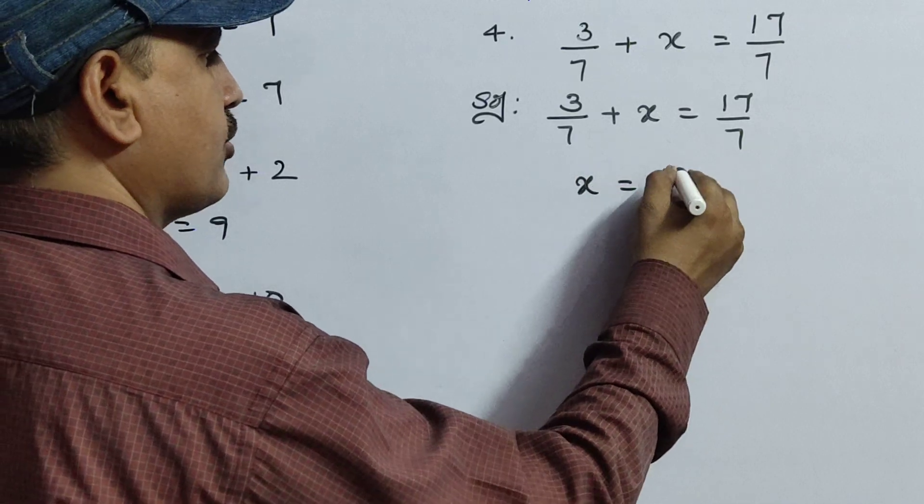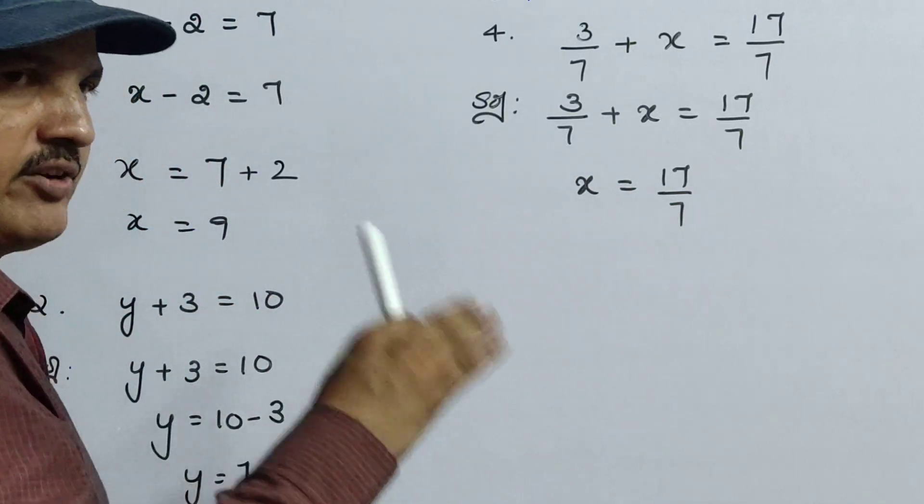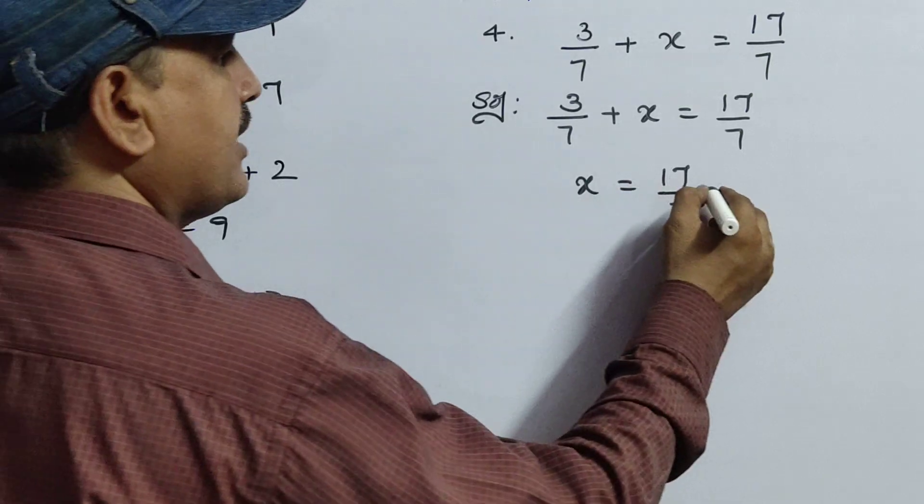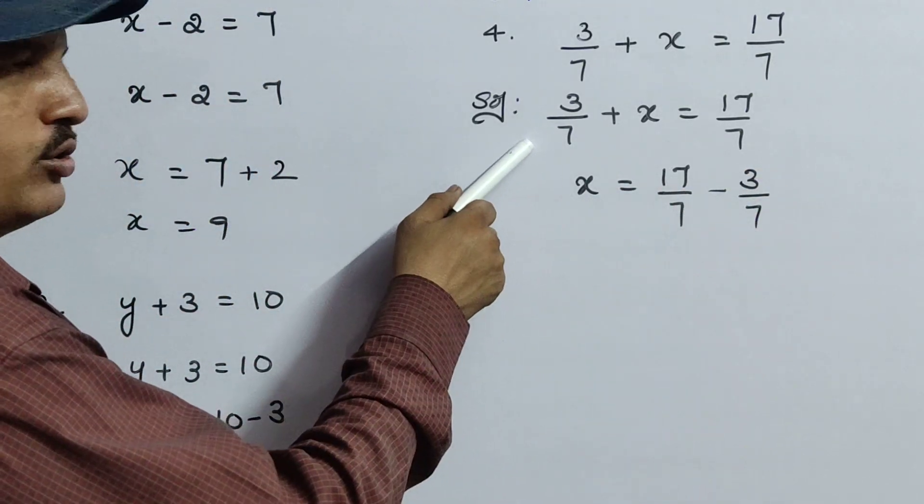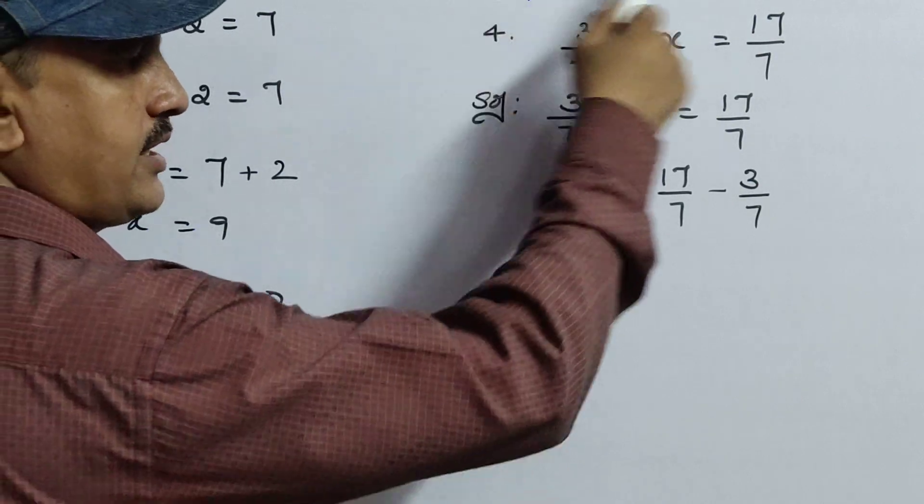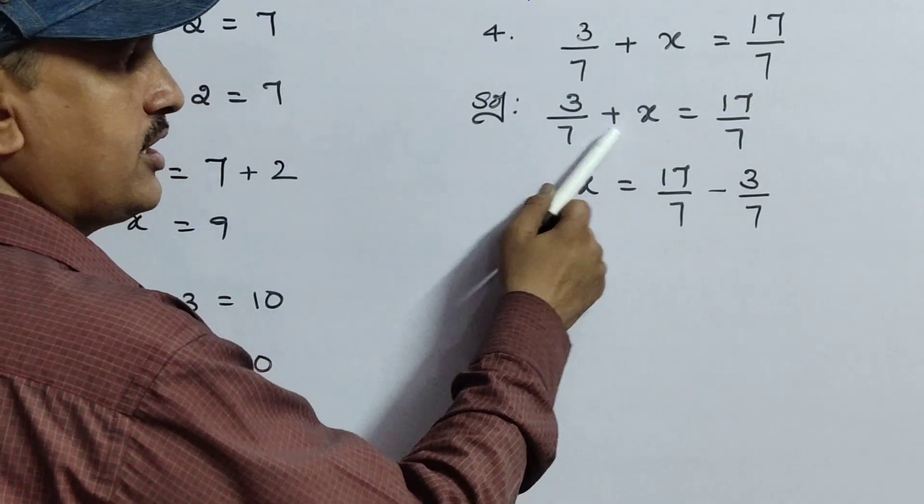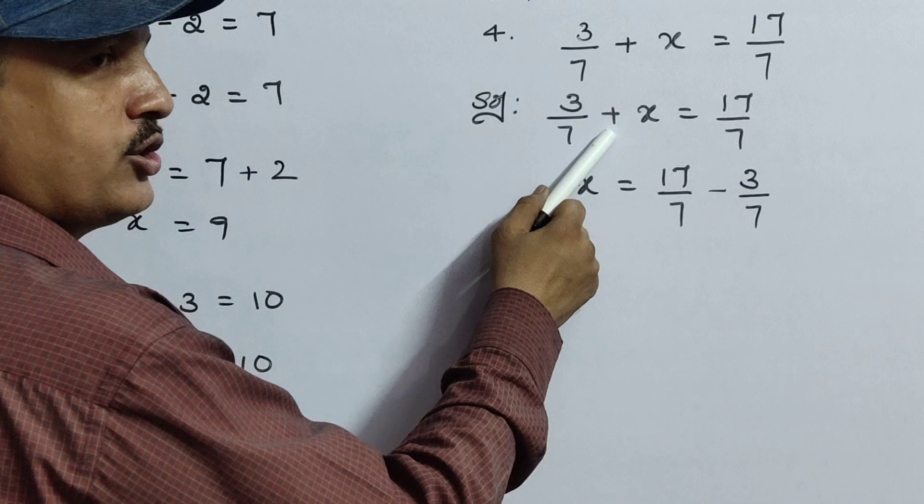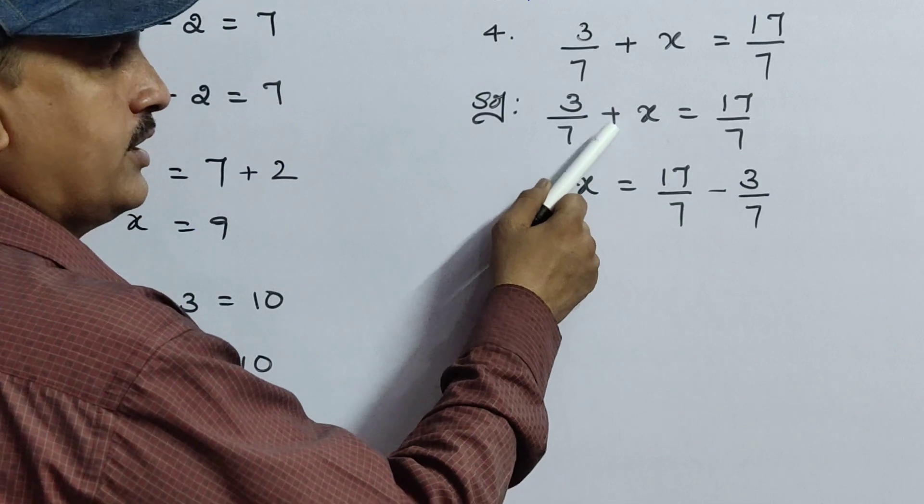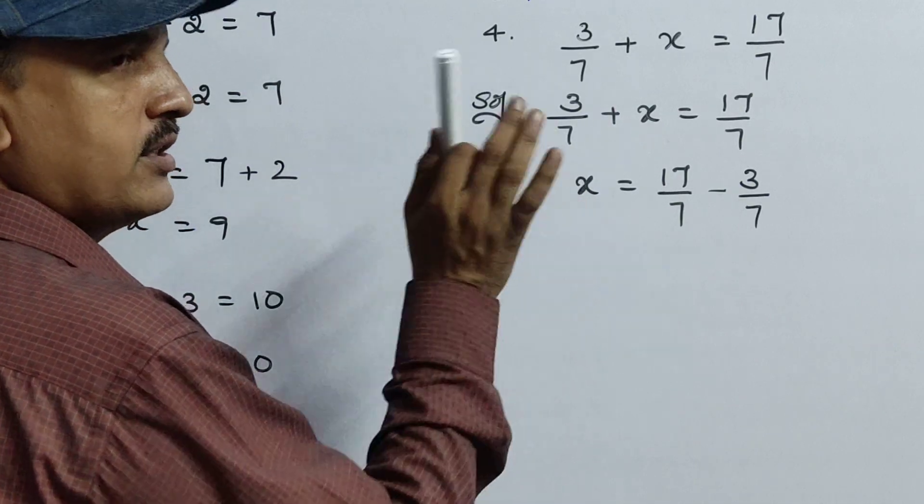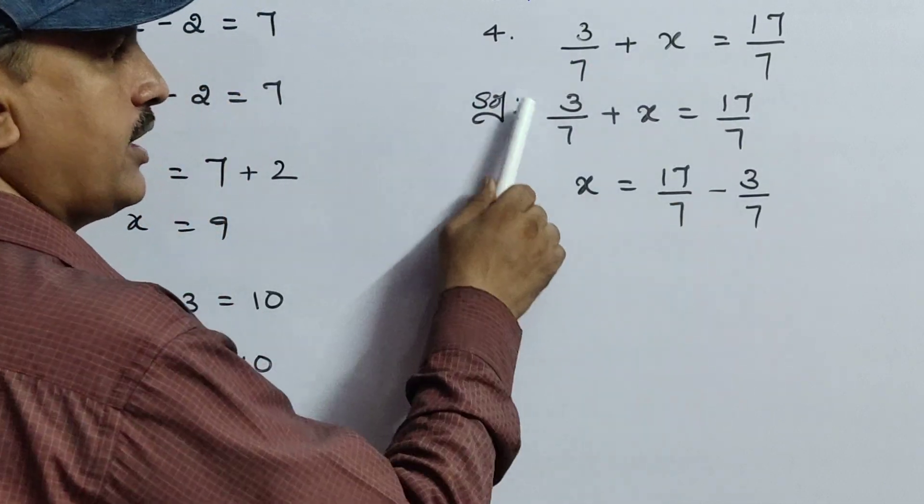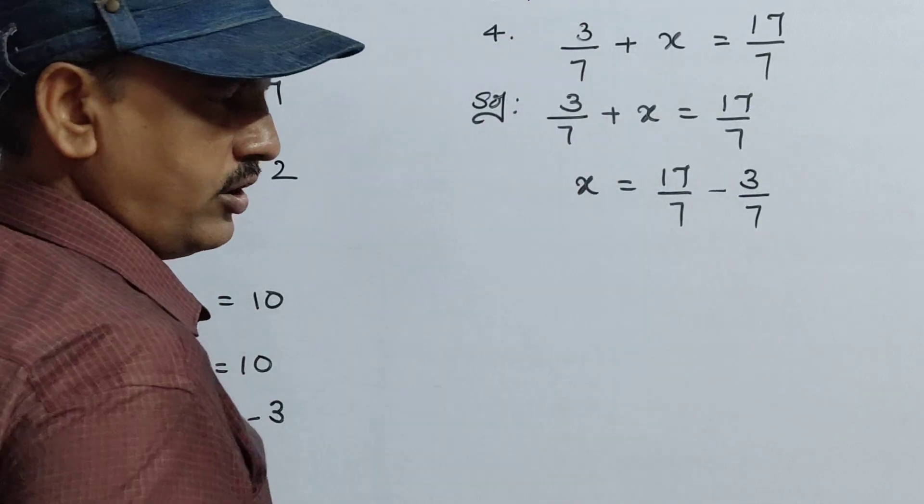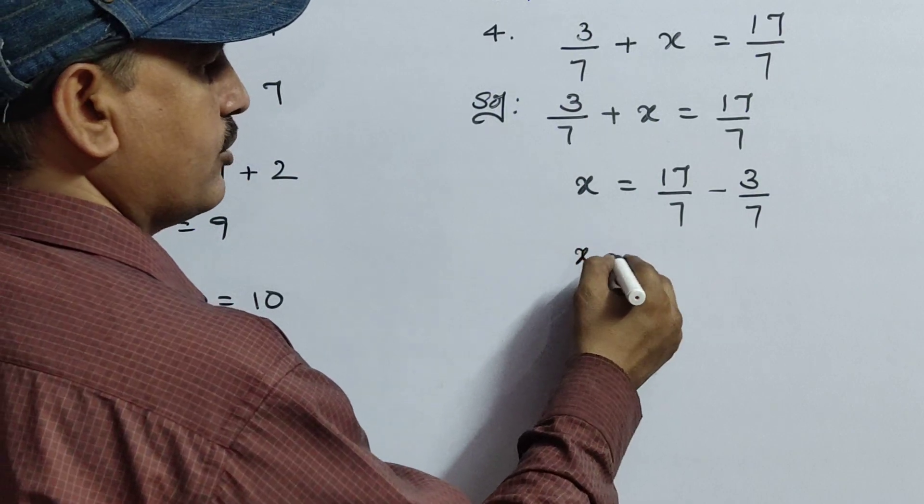Now as usual leave the x this side. X equals to 17 by 7. Now plus 3 by 7 will transpose means minus 3 by 7. You may get confused here. It is not into, it is plus 3 by 7. Plus 3 by 7 and here it is a plus. Relation is plus here. Until and unless into is there, don't change the relation. Here it is plus or minus means, this plus means it will go as a minus only.